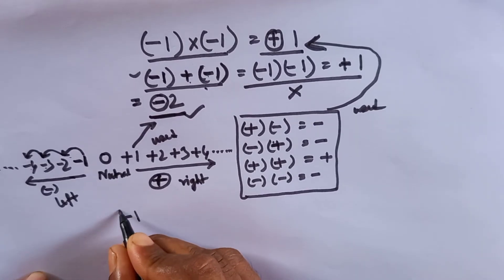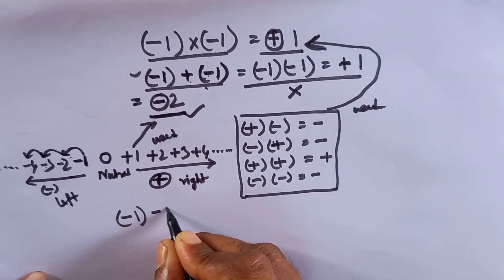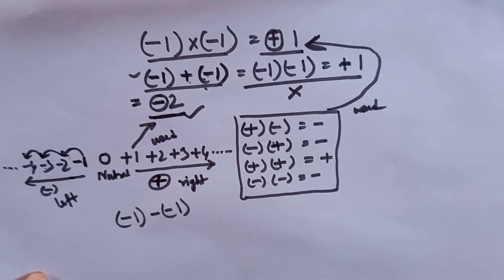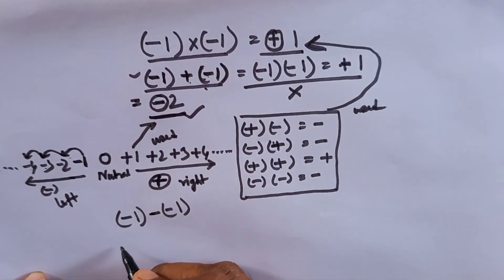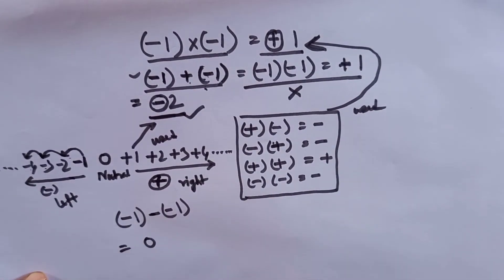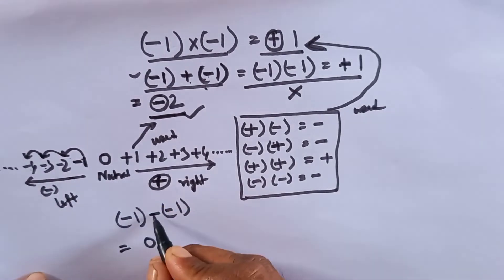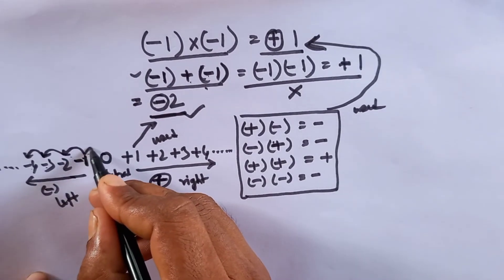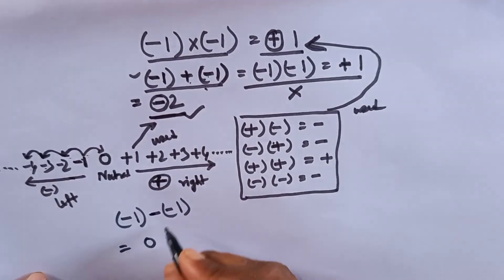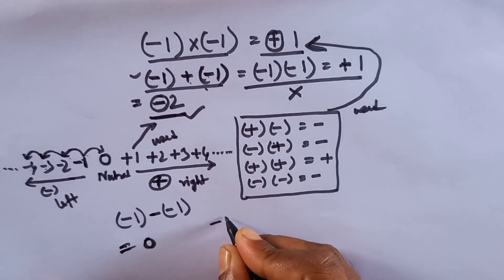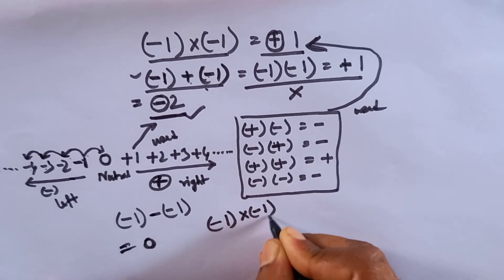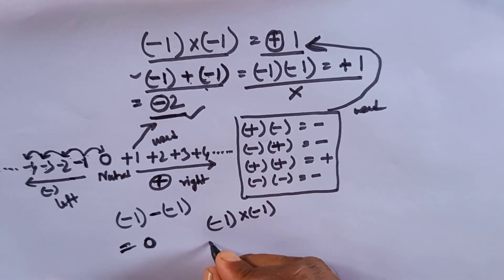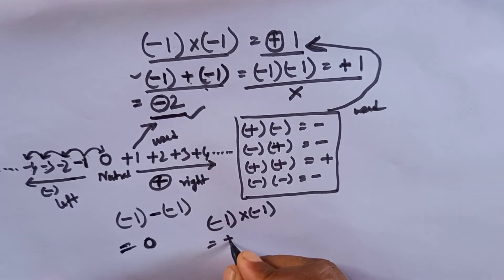When you do minus one minus minus one, we can write this is zero. How is this zero? Minus one minus another minus one gives zero. But when you do minus one minus one, so this is negative two — it gives plus... the result changes.